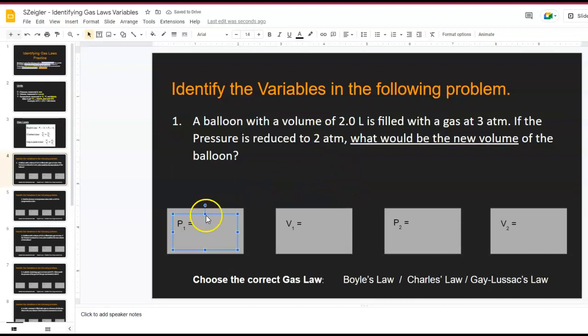Then you're going to fill in what P1, V1, and P2, and V2 is. So my P1 here is the three atmospheres. My V1 is two liters. And then it says pressure is reduced to, I'm sorry, two atmospheres.